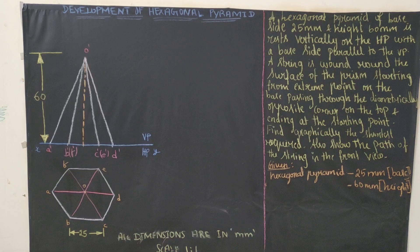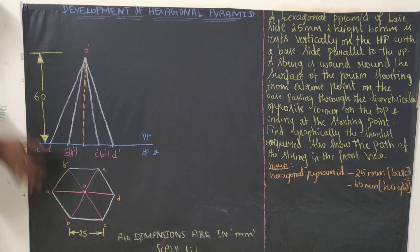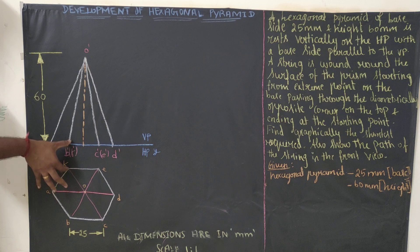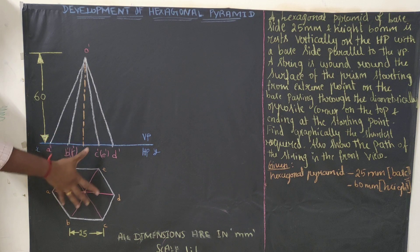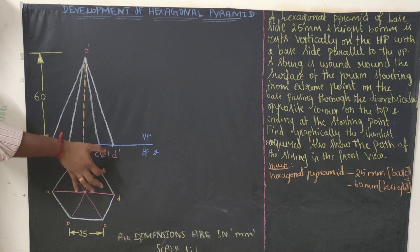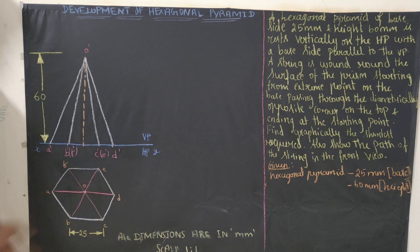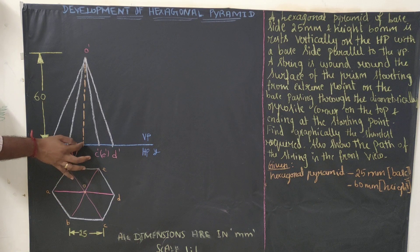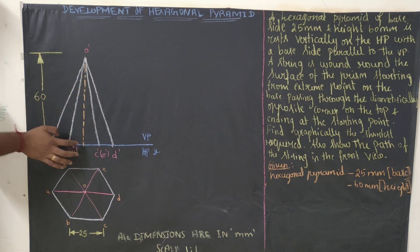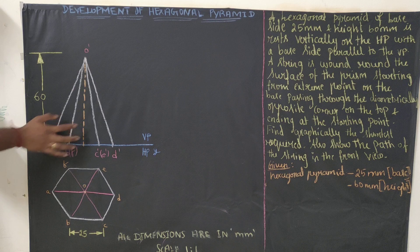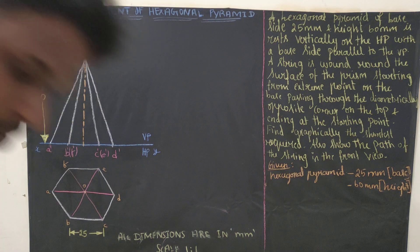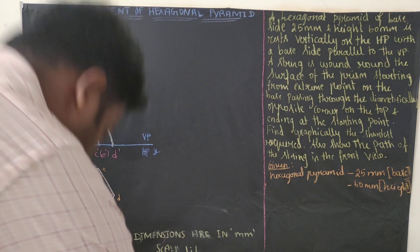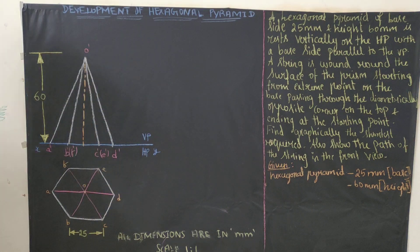By extending the top view points we can get the front view. Keep your scale vertically with respect to each point - A, F, E, D - to get the corresponding points on the reference line. From O, extend vertically and draw the axis line for a height of 60 mm. The axis line should be drawn as long dash, short dash, long dash, short dash.